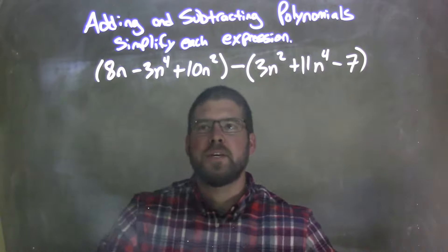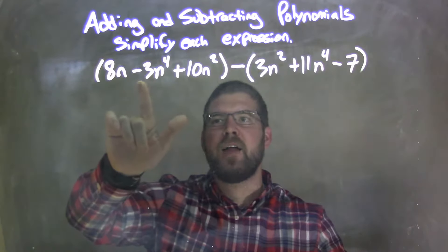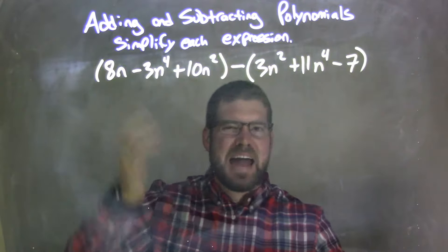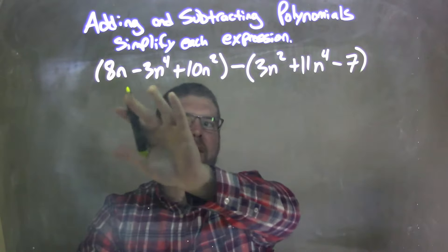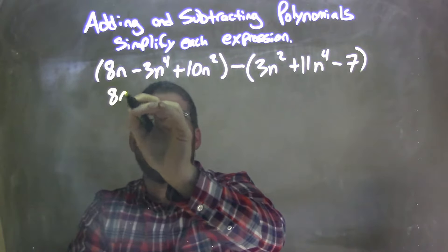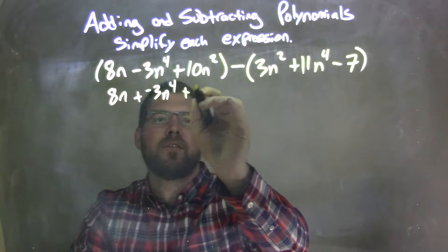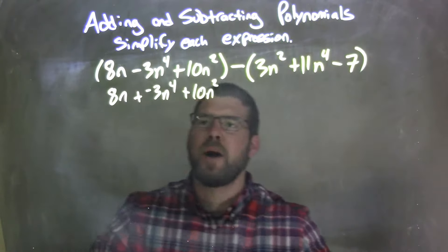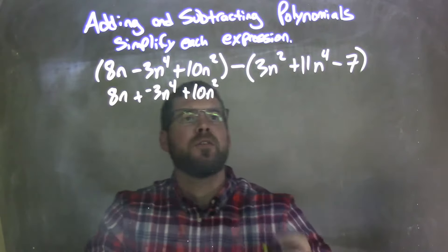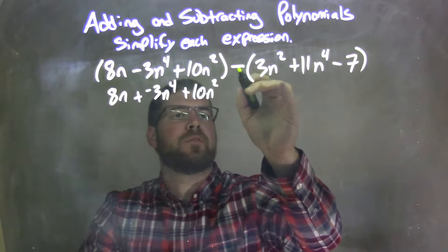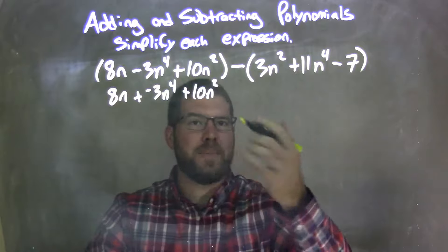So what I'm going to do first here is I'm going to make this parentheses here — that subtraction — adding a negative. And now there's nothing to simplify over there, so I can rewrite it without the parentheses: 8n plus a negative 3n to the 4th plus 10n squared. And if you watch my videos, I prefer adding a negative. So now I'm going to distribute this subtraction sign across, and in doing so I'm going to make everything to be added a negative.